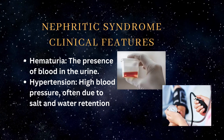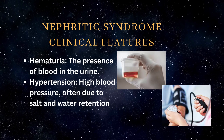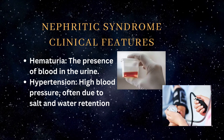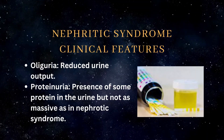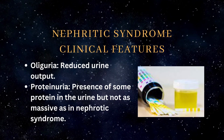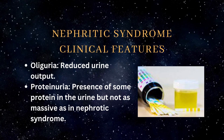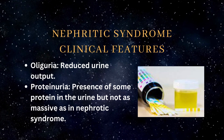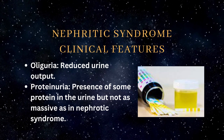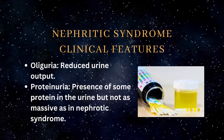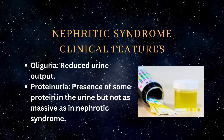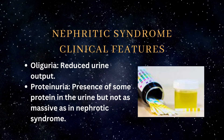Hypertension — high blood pressure, often due to salt and water retention. Oliguria — reduced urine output. Proteinuria — presence of some protein in the urine, but not as massive as in nephrotic syndrome.